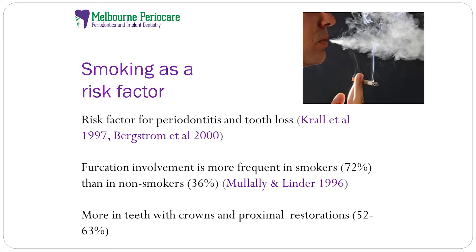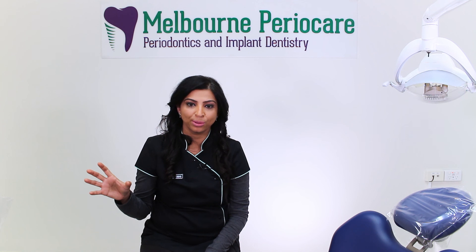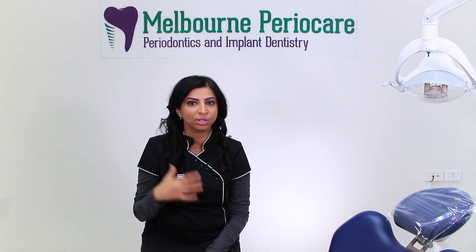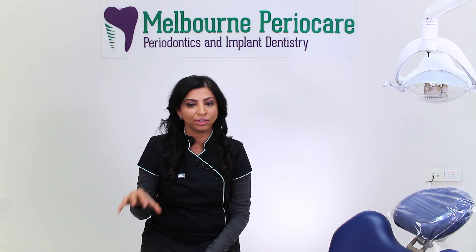Smoking is a major risk factor for periodontal disease and tooth loss, so it shouldn't come as a surprise that furcation involvement is more frequent in smokers than in non-smokers. It's very common to see cases where people have smoked a packet or two a day and have many furcation-involved molars. Other contributing factors include crowns and proximal restorations — in certain studies, about 50% of teeth with furcation involvement also have crowns or proximal restorations that have encroached in the area.